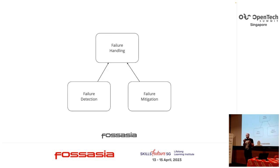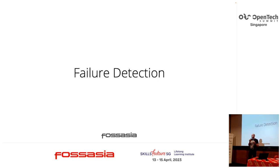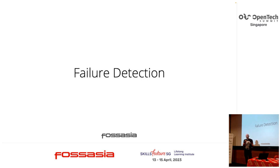Failure handling always consists of two components: failure detection and failure mitigation. Failure detection refers to the mechanism that detects if a failure has occurred. I like to cast a wider net and think about failure detectors in terms of witnesses — a predicate that confirms the presence or occurrence of a failure.